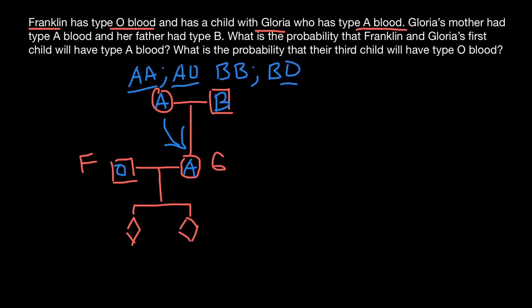So we know that the genotype of her father was BO and not BB. So we know now for sure that the genotype of Gloria is AO. She got A allele from the mother's side and O allele from her father's side. So her genotype is AO and phenotype blood group A.